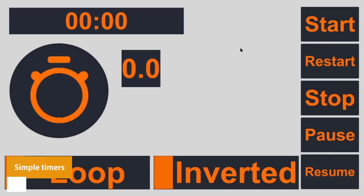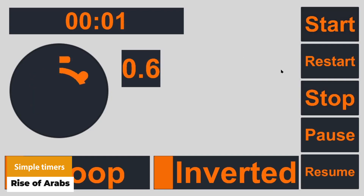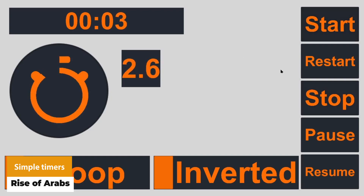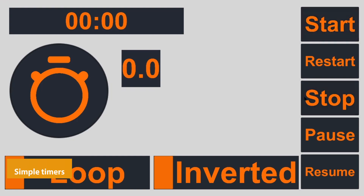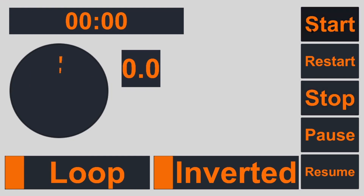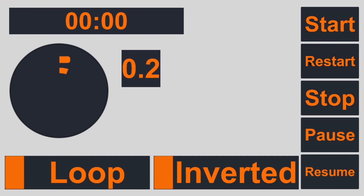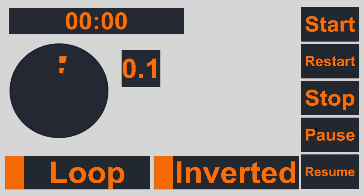The next one is Simple Timers. It's a drag-and-drop timer to help create time-based events displaying time in Unity UI. You've got options for non-coders, different ways to display time, cooldowns, and lots of variety for controlling time.